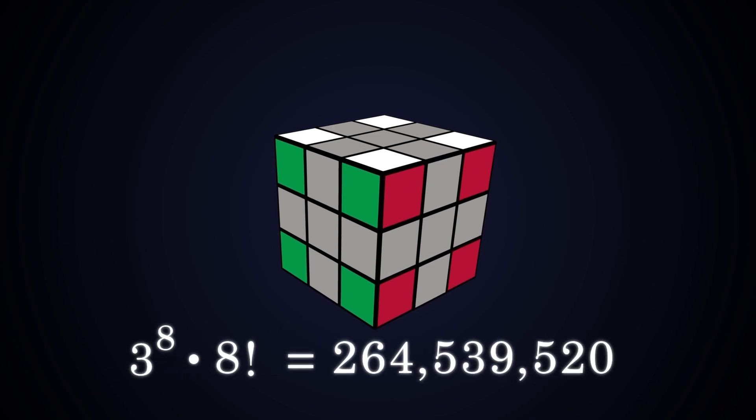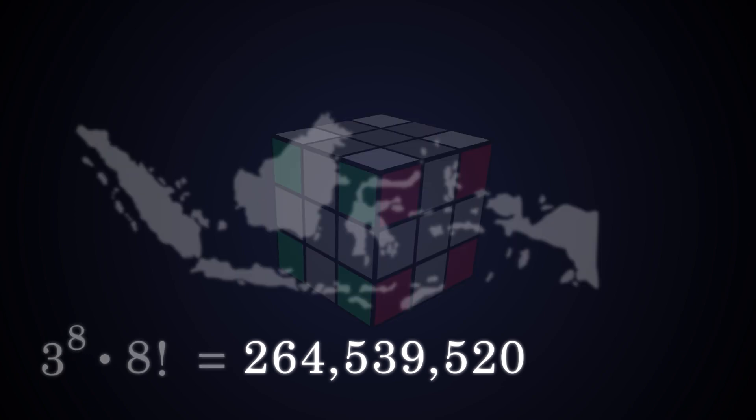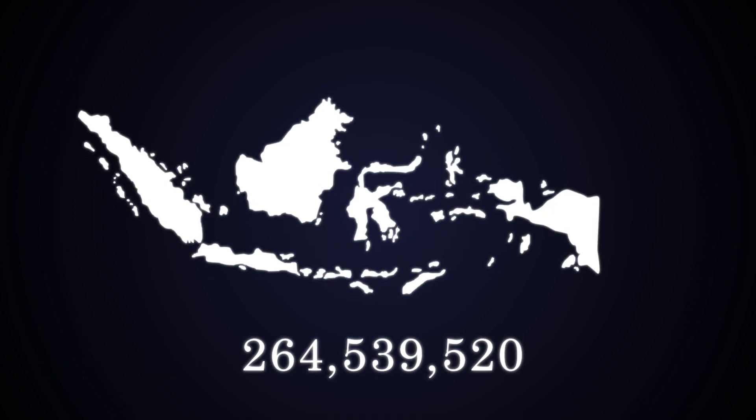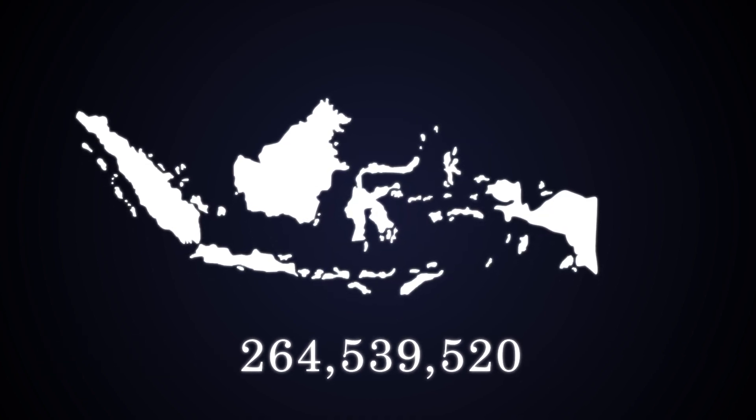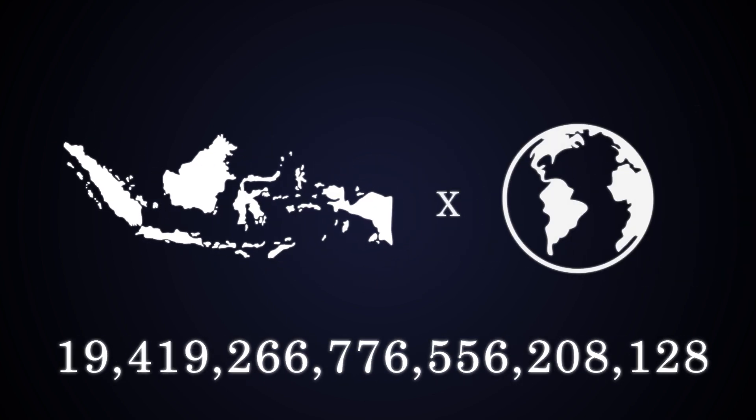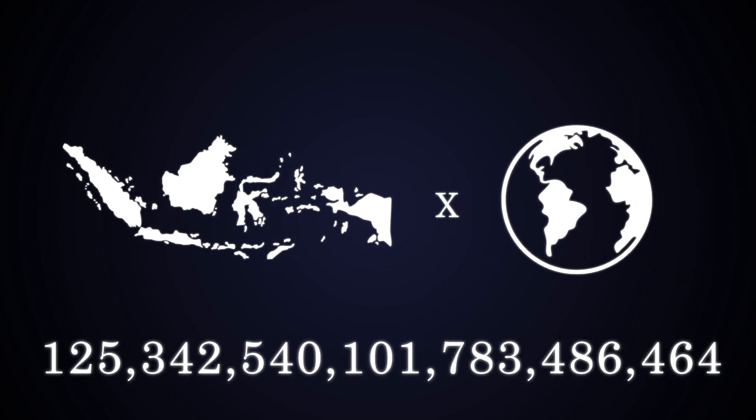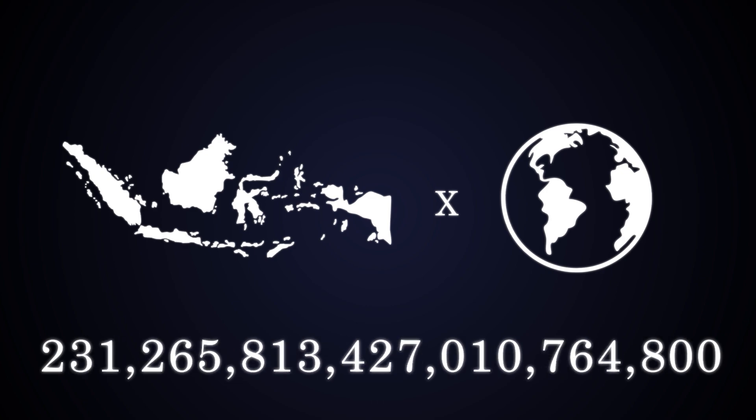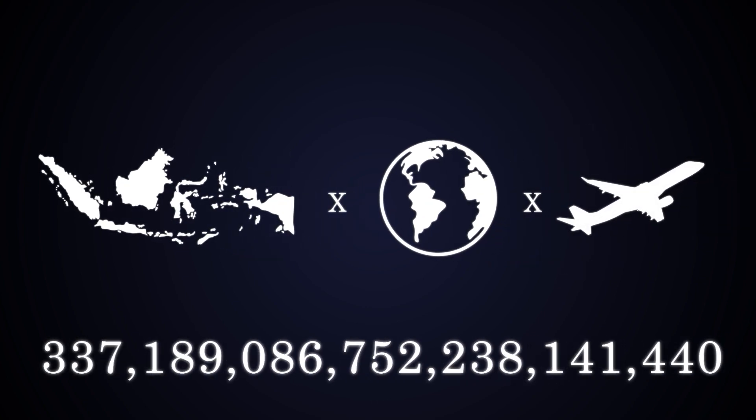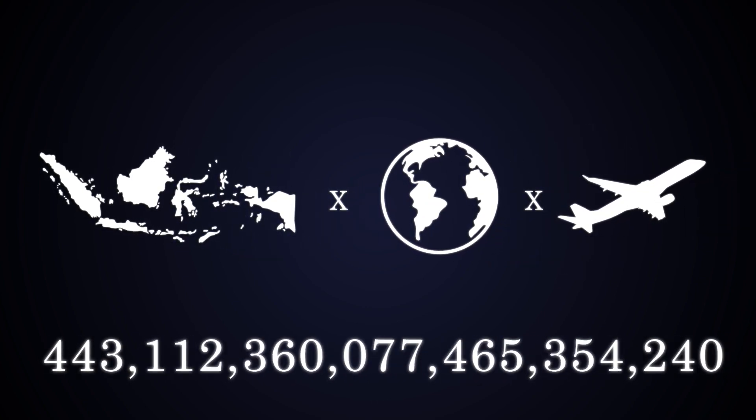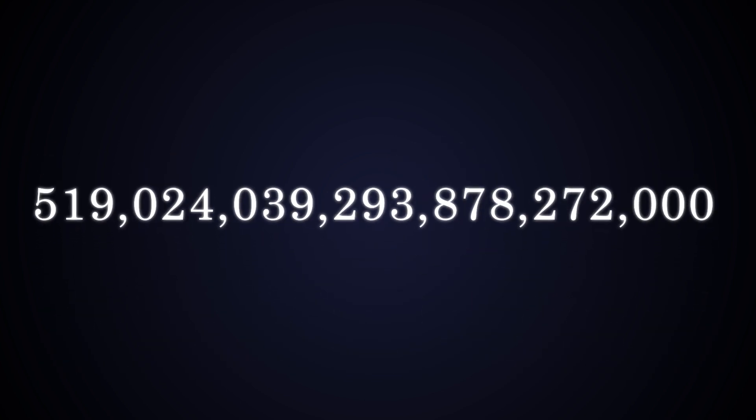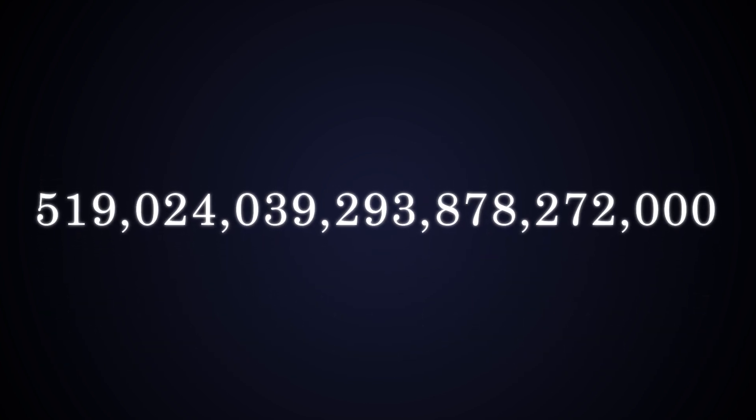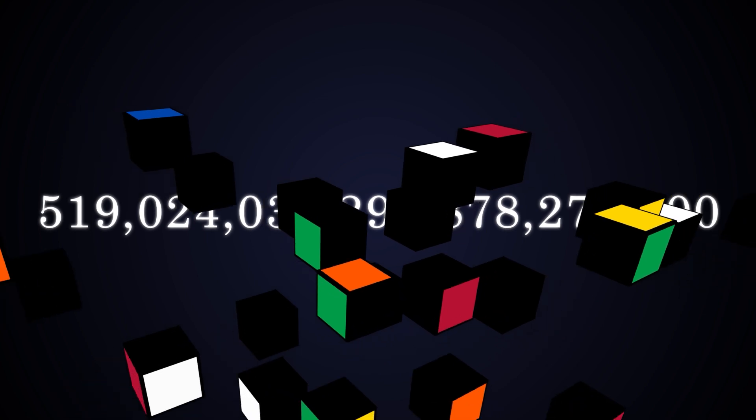Meaning that if everyone from Indonesia held their own mini earth with a bunch of mini humans all flying their own mini planes with 250 aliens, you would get the total number of combinations for assembling a Rubik's cube.